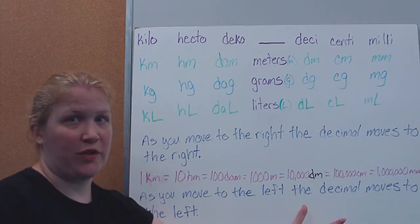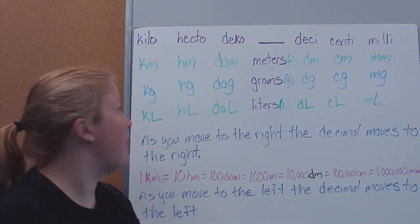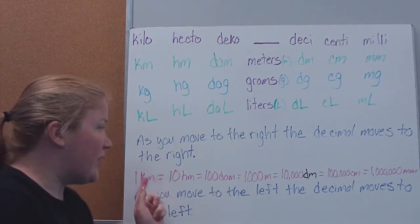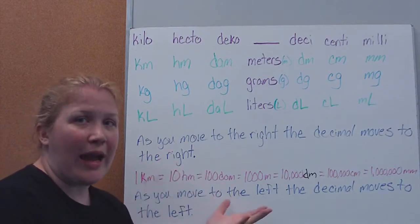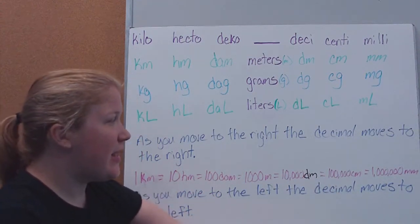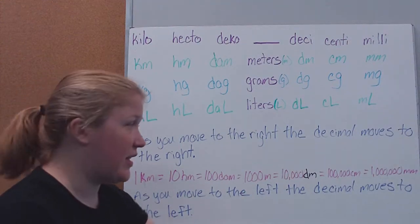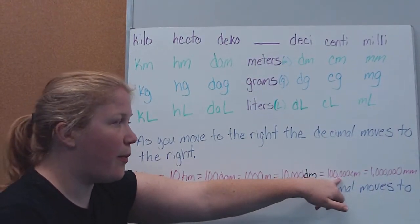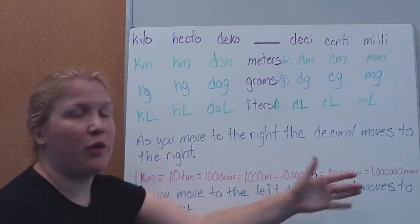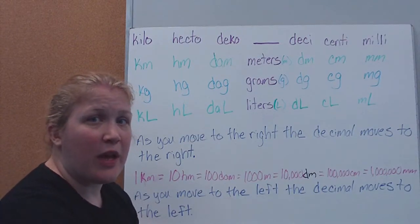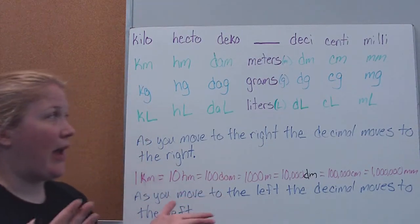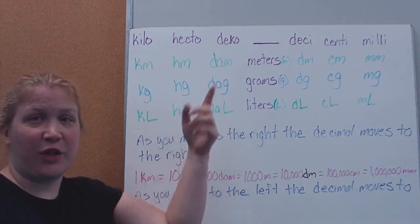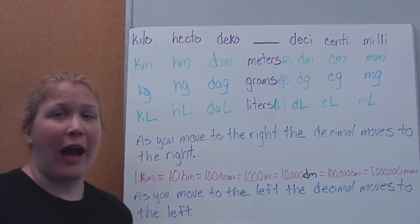These are all equivalent measures — we've just renamed them using a different prefix. As we move right we're adding zeros, which is what happens when we move the decimal right. The same thing happens moving left: a million millimeters is only 100,000 centimeters. We moved the decimal one spot to the left and one of those zeros went away. That's all we're doing — moving our decimal back and forth.